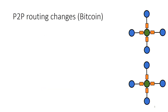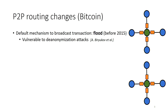When we talk about cryptocurrency systems, Bitcoin is one of the most popular ones and that is what we use for our analysis. I'll give you a brief overview of how peer-to-peer broadcasting works in this network. The default mechanism before 2015 was that if a node has a transaction, it would just broadcast or flood it immediately to its neighbors.